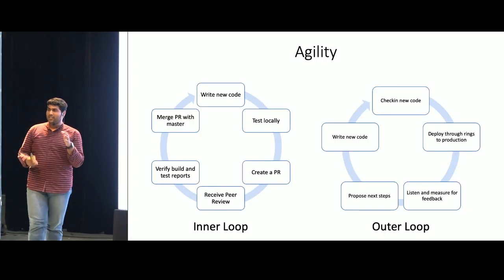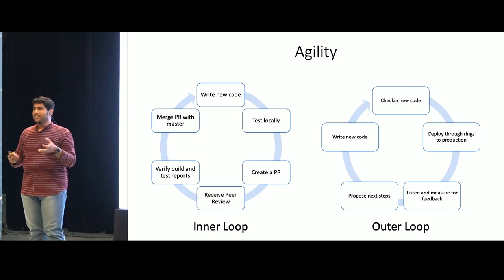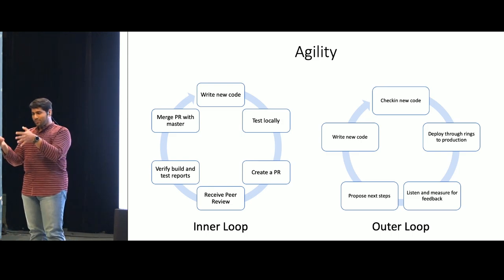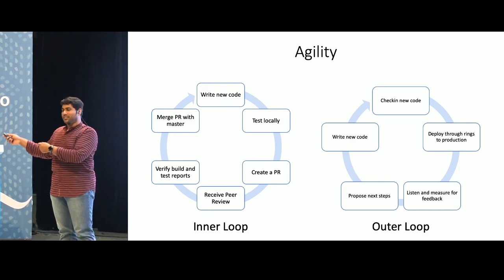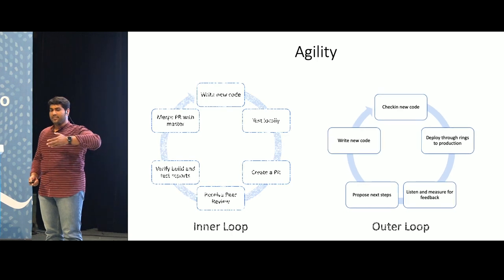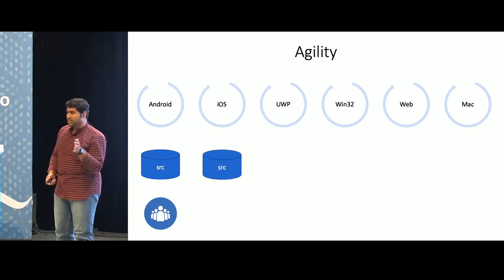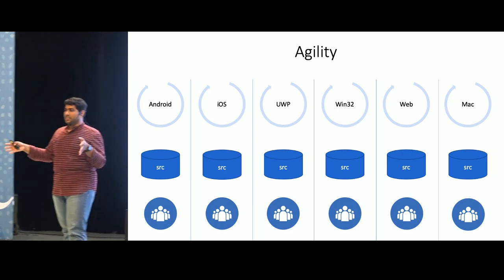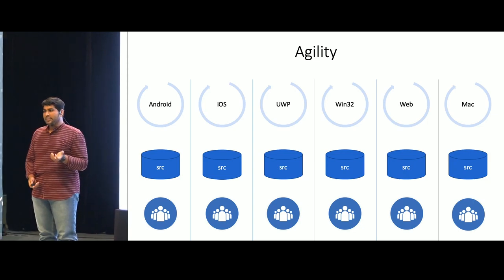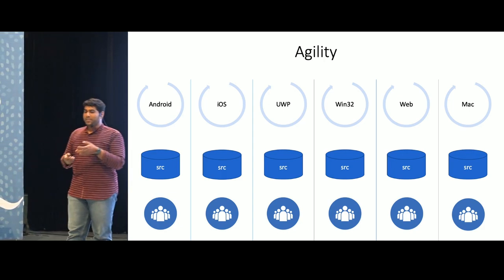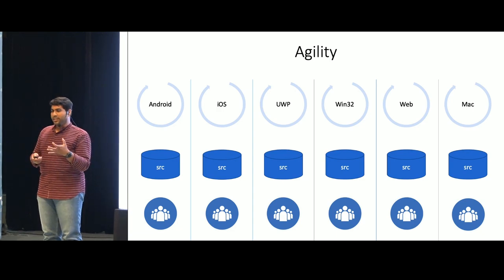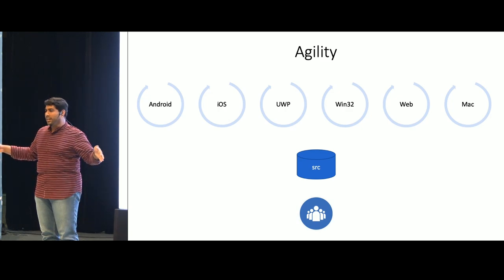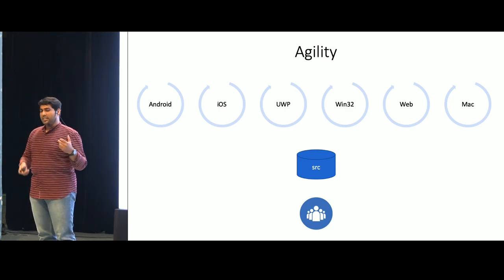While developing these experiences, you can broadly break it down into two loops. One is an inner loop where you write code, get it reviewed, raise a pull request, get merged into your master branch. Then once the code is in, you fork off into a release branch, release into various rings through production, get user feedback and iterate again. When this is being done across six platforms, you may start with separate expertise and separate repositories, meaning over time as these controls get more complex, they're developed in silos, losing agility. That's where we tried to bring all source code together in one repository.